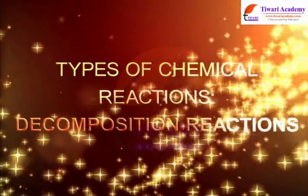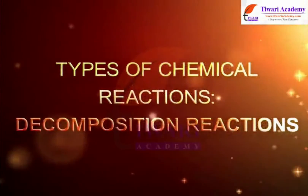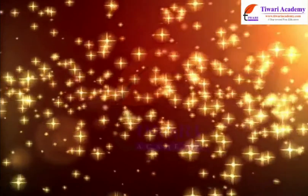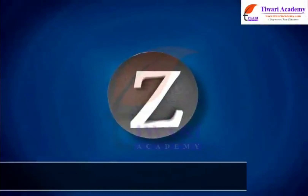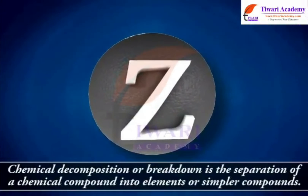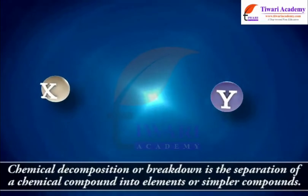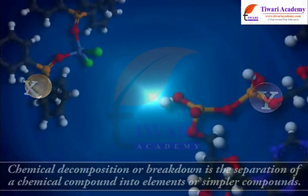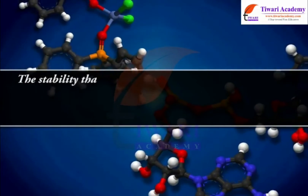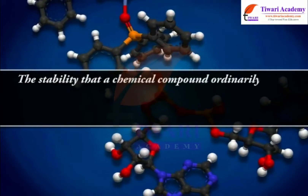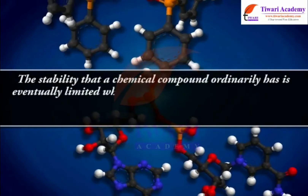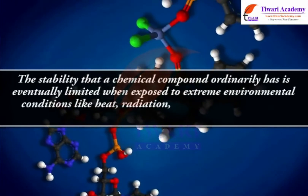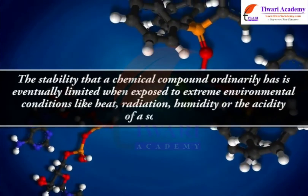Types of chemical reactions — Decomposition reactions. Chemical decomposition or breakdown is the separation of a chemical compound into elements or simpler compounds. The stability that a compound ordinarily has is eventually limited when exposed to extreme environmental conditions like heat, radiation, humidity, or the acidity of a solvent.